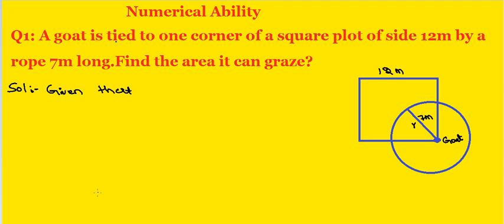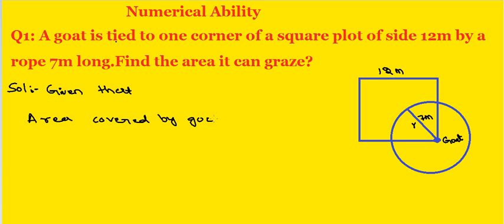So we divide by 4 because the rope is tied at the corner of the plot, and only 1/4th part is what the goat can graze. Therefore, area covered by goat equals pi r squared by 4. We divide by 4 because the rope is tied at the corner of the plot and only 1/4th part the goat can graze.